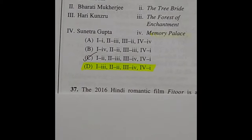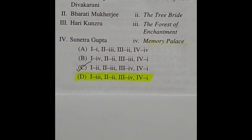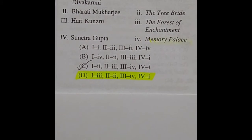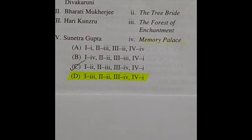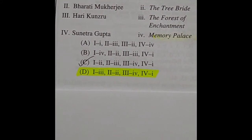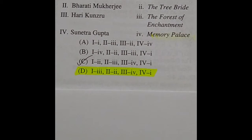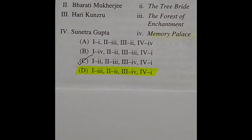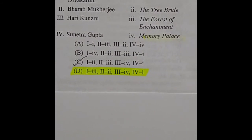Question 36: Match List 1 with List 2. List 1: Chitra Banerjee Divakaruni, Bharati Mukherjee, Hari Kunzru, Sunitra Gupta. List 2: Memories of Rain, The Tree Bride, The Forest of Enchantment, Memory Palace. The right answer is option D: Chitra Banerjee Divakaruni — The Forest of Enchantment; Bharati Mukherjee — The Tree Bride; Hari Kunzru — Memory Palace; Sunitra Gupta — Memories of Rain.